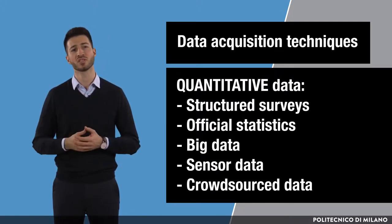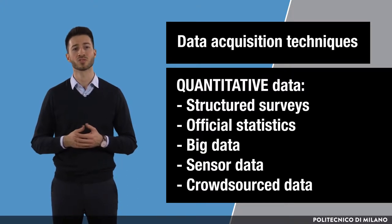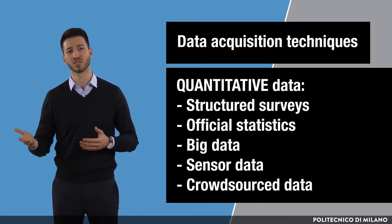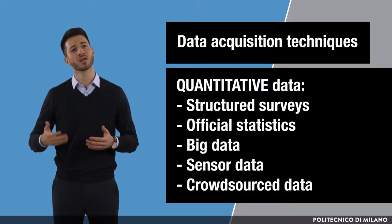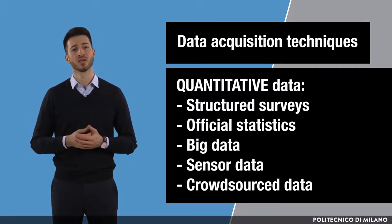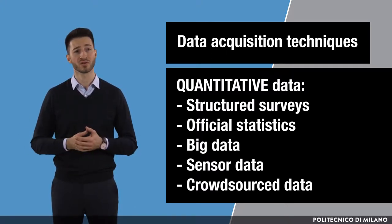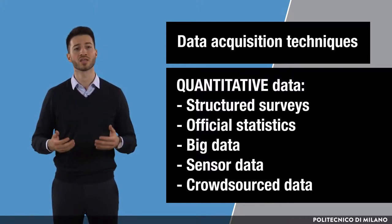Then official statistics published by the governmental agencies or other public bodies like OECD or World Bank. Then large and complex sets of data, like the data collection from social networks. Then sensor data, like tracking traffic using satellite images. Or even crowdsourced data, like using mobile phone and GPS technologies to collect real-time traffic data.